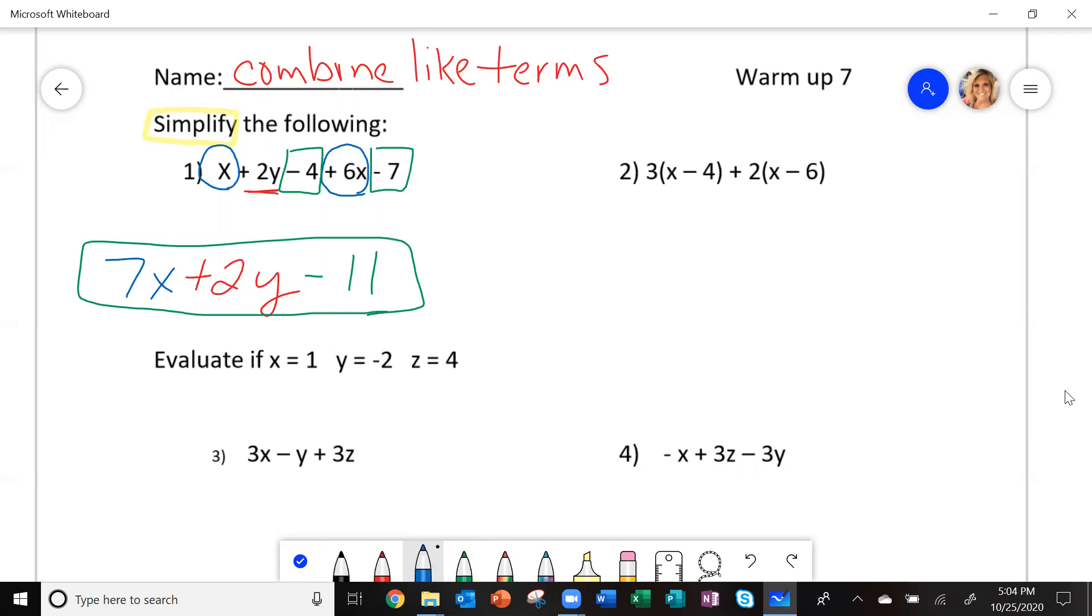Now on the next one, before we can combine like terms, we have to do the distributive property. There is a number outside the parentheses, and you have to multiply it by each thing inside the parentheses. So 3 times x is 3x. 3 times negative 4 is negative 12. 2 times x is positive 2x. 2 times negative 6 is negative 12.